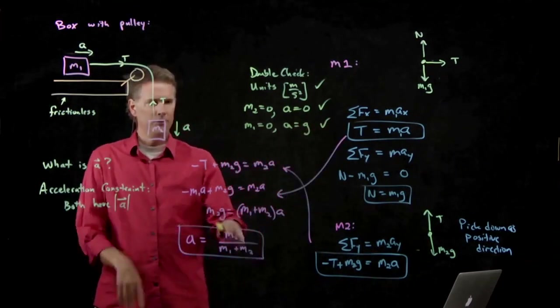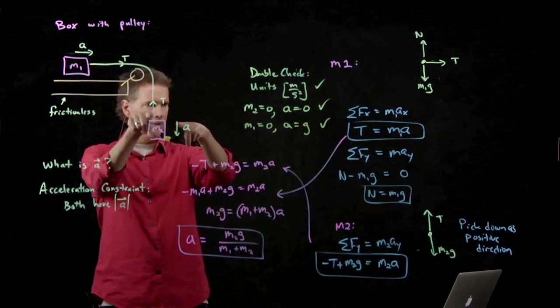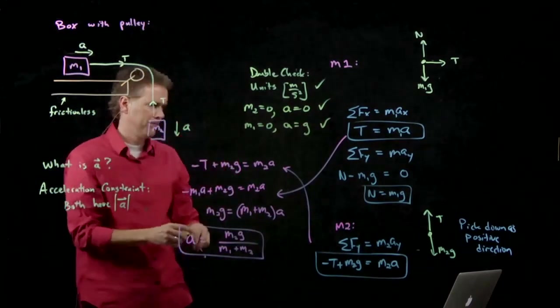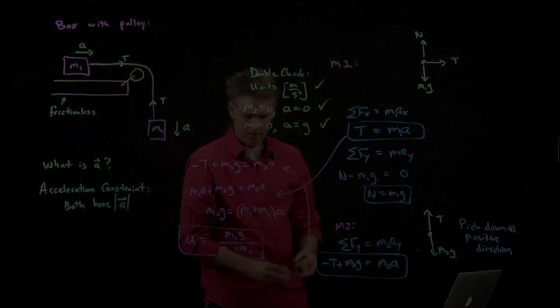Why isn't it negative G? Because we already said that for this block, positive is down. Okay, questions on that one?